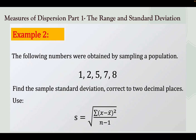Let's have an example. The following numbers were obtained by sampling a population: 1, 2, 5, 7, 8. Since the data was obtained by sampling a population, our given data is a sample.